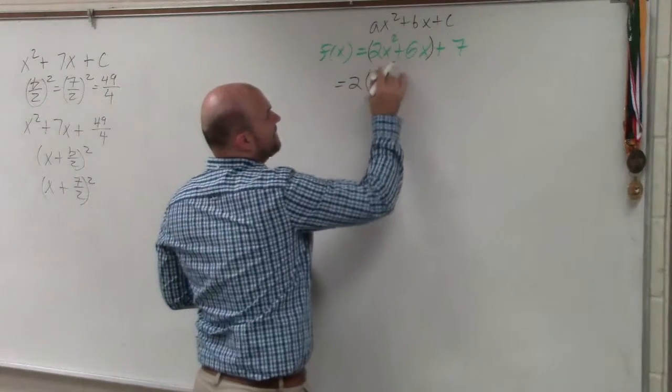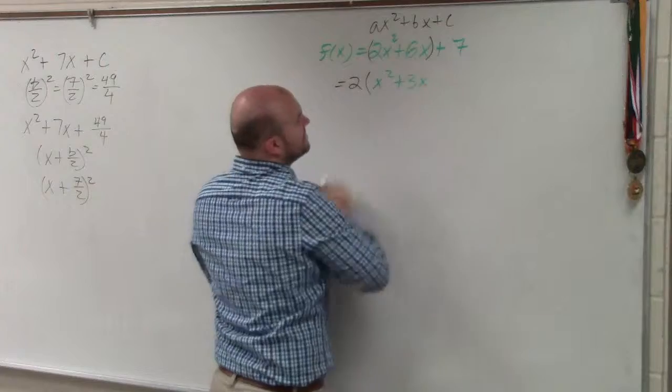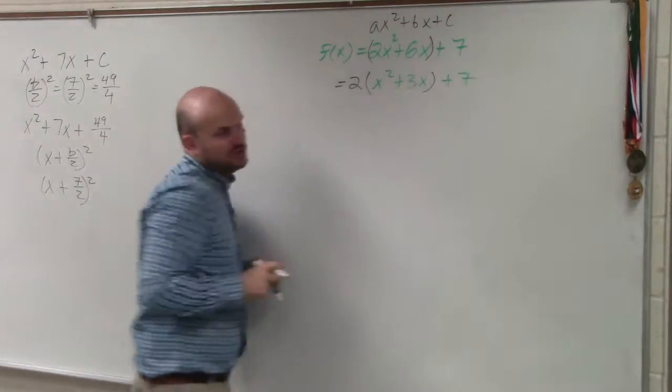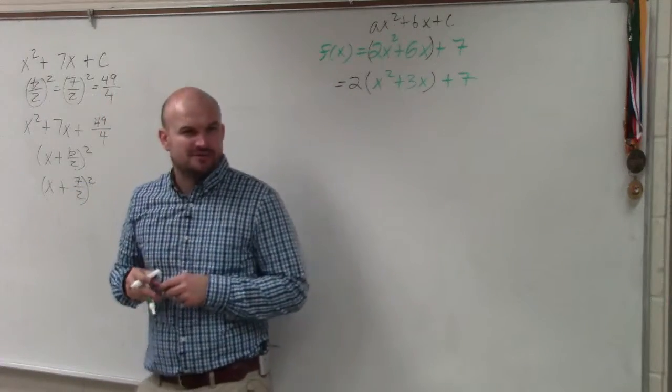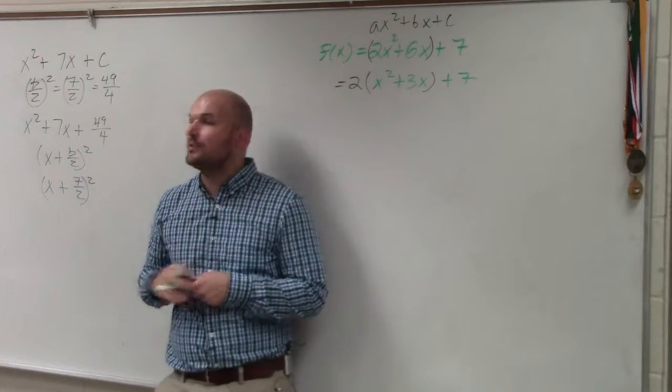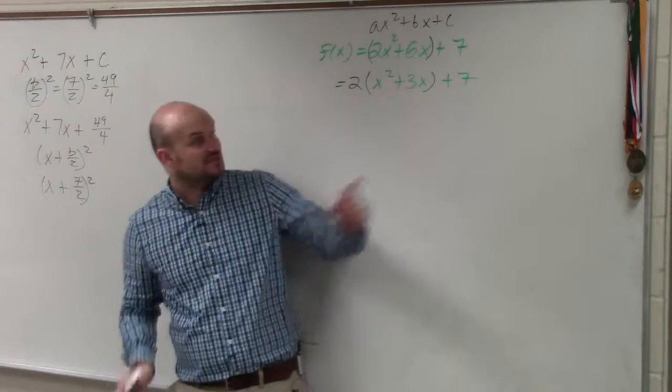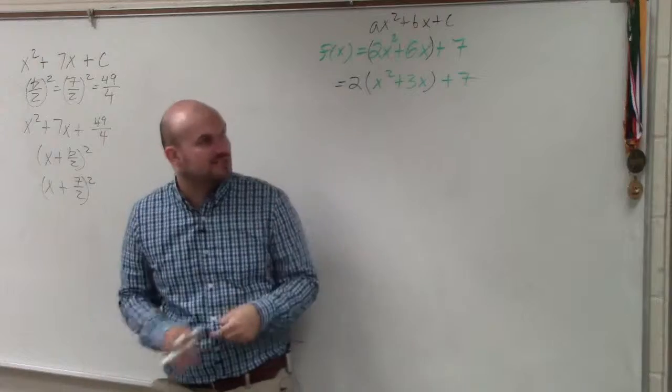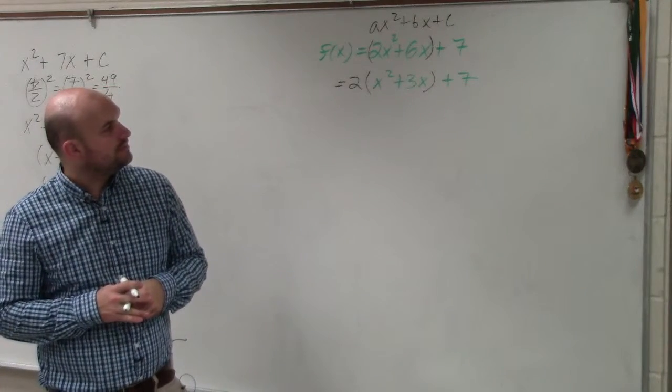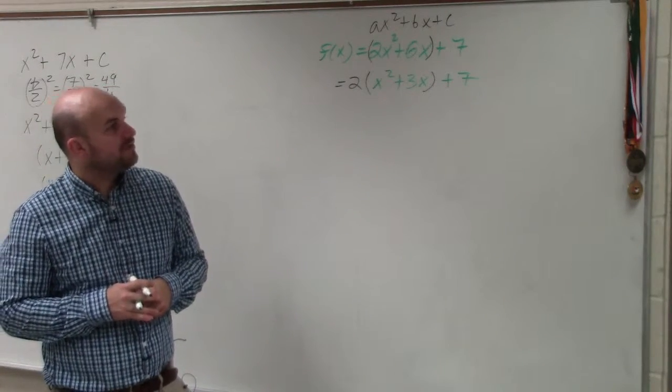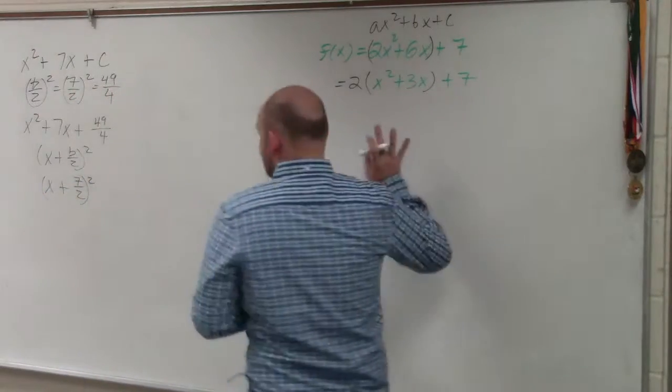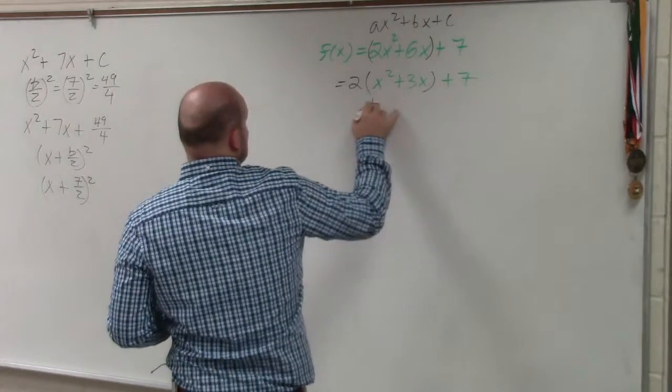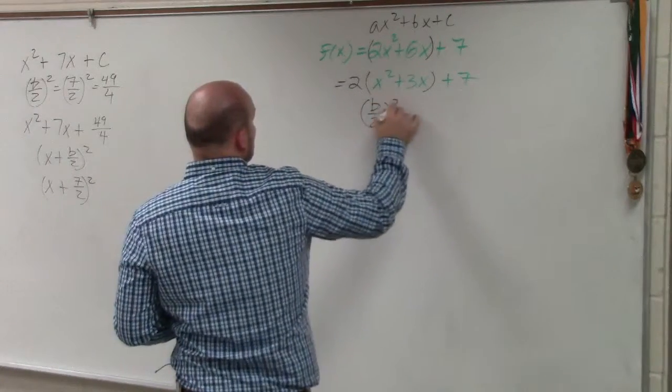When I factor out a 2, I have x squared plus 3x plus 7. This is usually where students get confused. They want to give up once they know there's a fraction and they want to go ahead and use decimals. Please avoid using decimals, especially in this case where you'd have 3 halves. Just keep it as fractions. To be able to find the value that completes the square, you're just going to take b divided by 2 and square it.